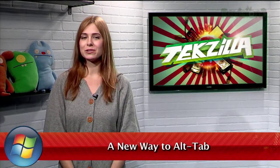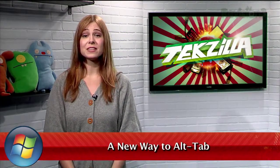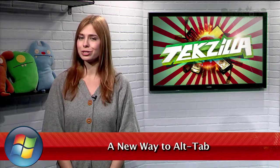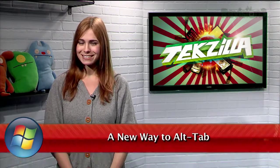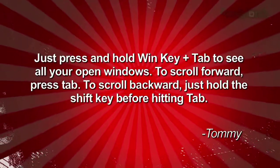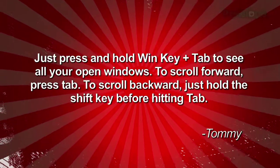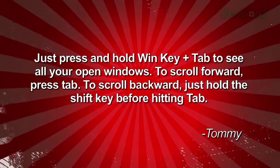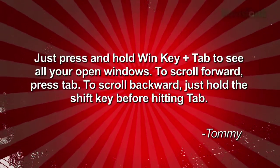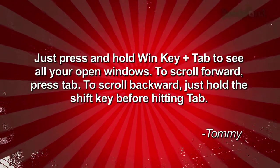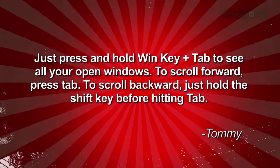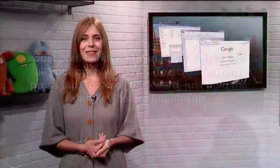It's time for another Windows 7 tip, and this one comes from viewer Tommy. He writes: just press and hold Win key plus Tab to see all your open windows. To scroll forward, press Tab. To scroll backward, just hold the Shift key before hitting Tab.